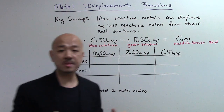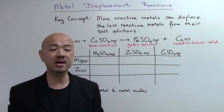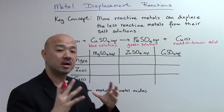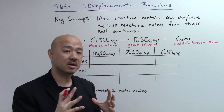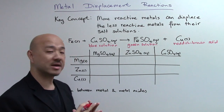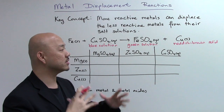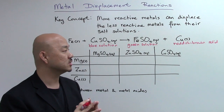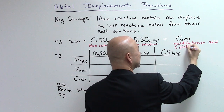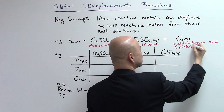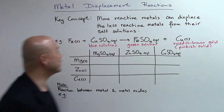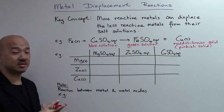Or sometimes we say it's pinkish, because when it's freshly formed, the copper is kind of pink in color until it reacts with the oxygen in the atmosphere, and then it will start to become reddish-brown. So sometimes we say it's a pinkish solid. So this is a metal displacement reaction.